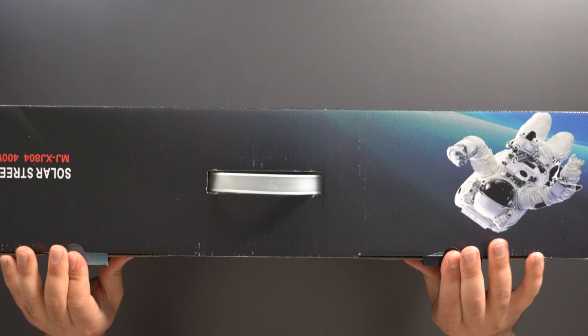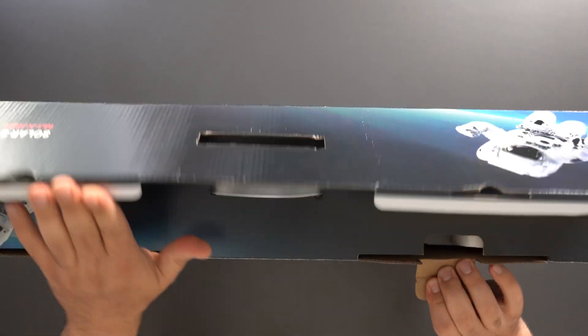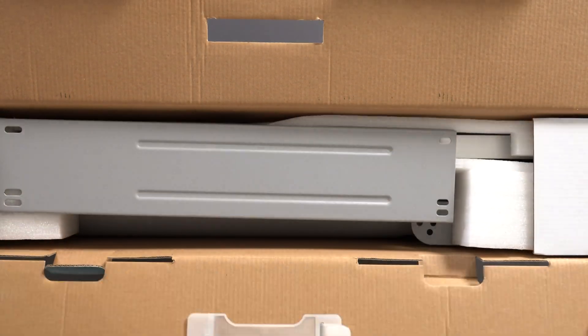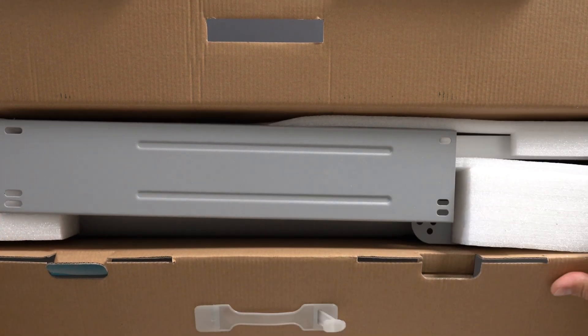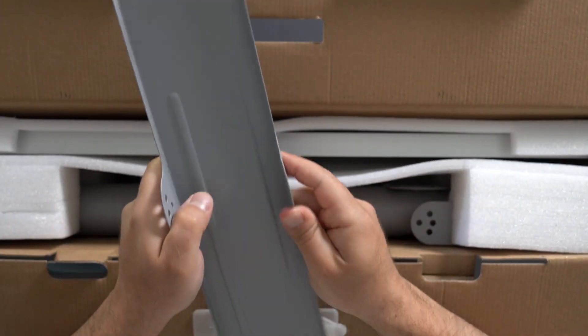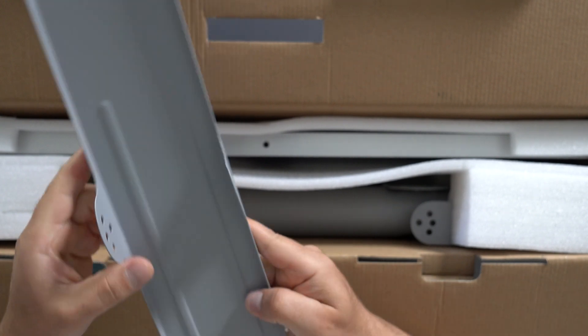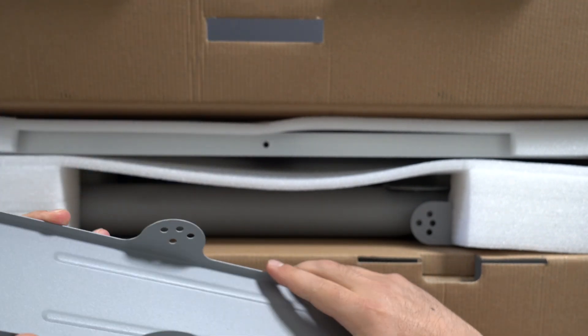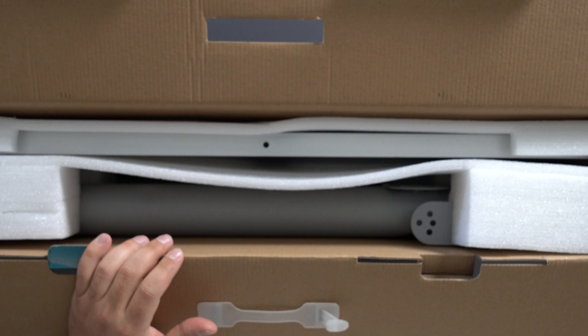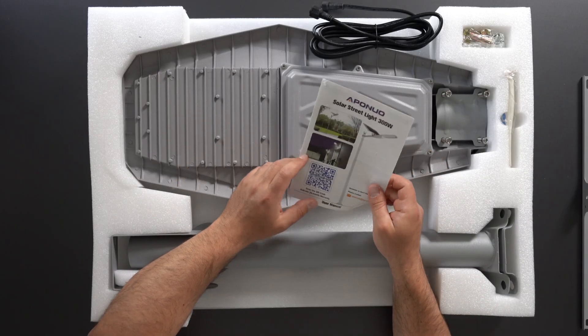Let's see what comes out of it. It also has a remote control. We have a metal bracket. This is probably to angle either the solar or the actual light itself. Taking this out of the box...